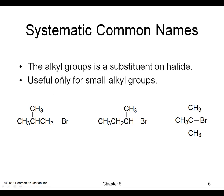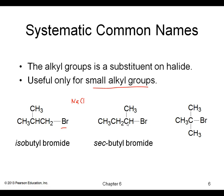You can also have common names that are useful for only small alkyl groups. This is the isobutyl group, so I can name this as isobutyl bromide. These systematic common names are when I name it as a bromide, chloride, or iodide, and so forth — similar to how we named sodium chloride back in general chemistry. Here the bromine is on a secondary carbon, so we have sec-butyl bromide. Here the isomer is the t-butyl group, so we have t-butyl bromide or tert-butyl bromide.